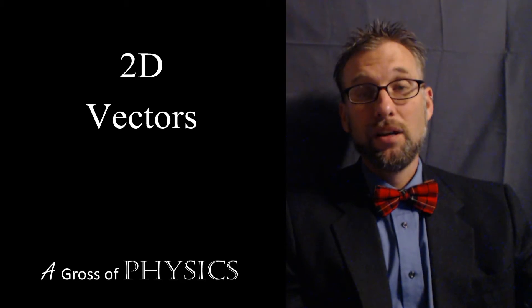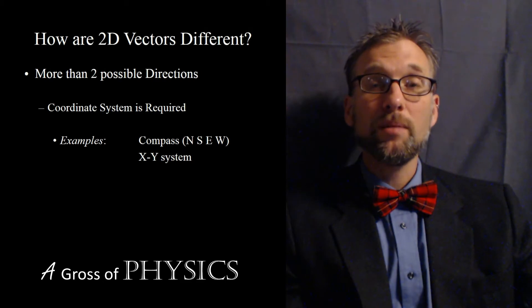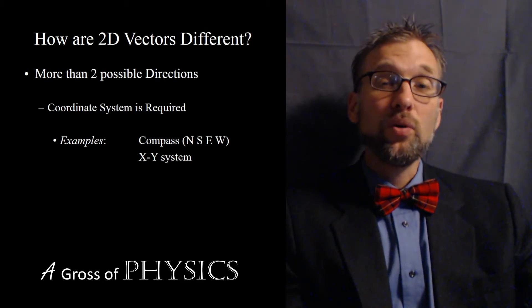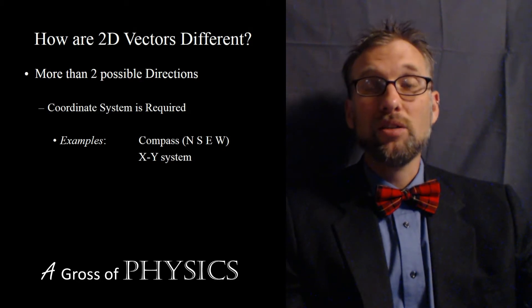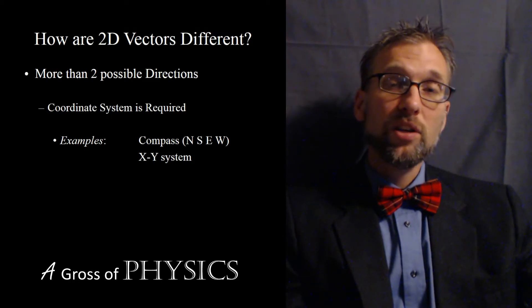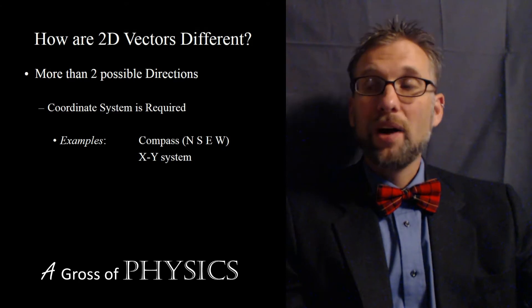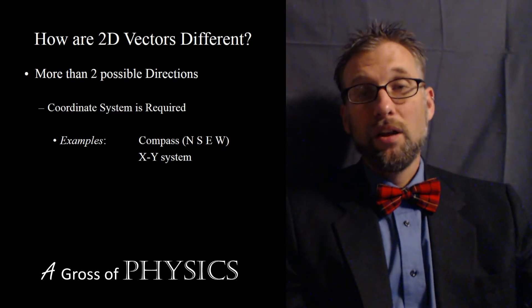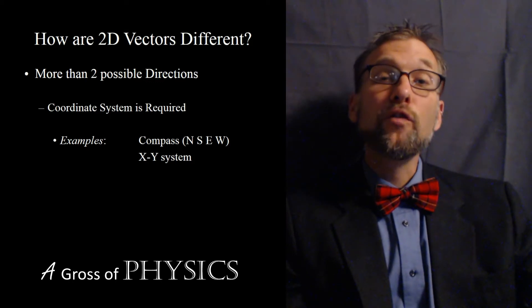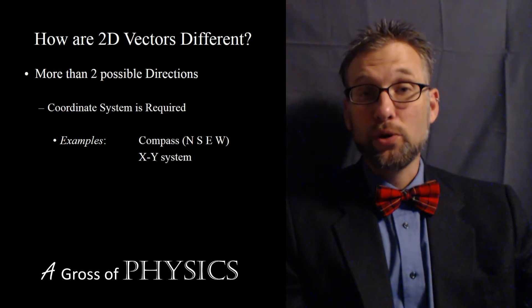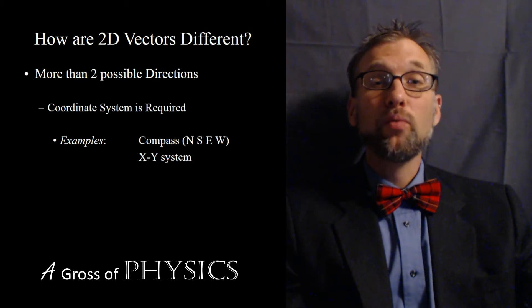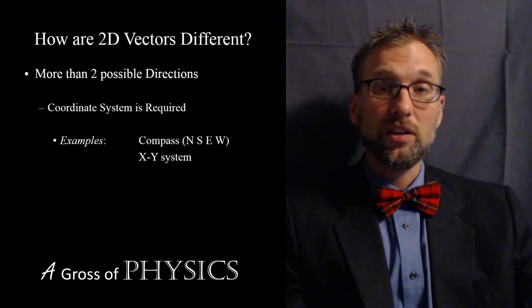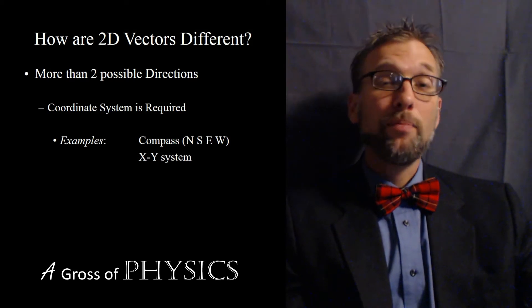So how are two-dimensional vectors different? Well, two-dimensional vectors can be drawn anywhere on a coordinate axis. Typically, we're going to have one of two coordinate axes: the XY coordinate system or the north-south-east-west coordinate system. You can draw your vector anywhere between zero and 360 degrees, perhaps 20 degrees north of east, 70 degrees west of south, 14 degrees north of south, or possibly 15 degrees east of south. All of these different directions will be drawn from a coordinate axis, and you'll need to use your protractor to draw them.